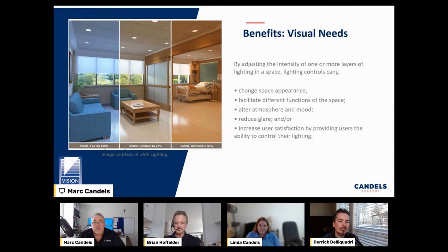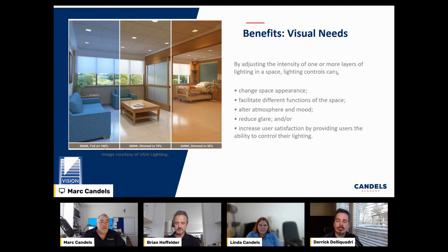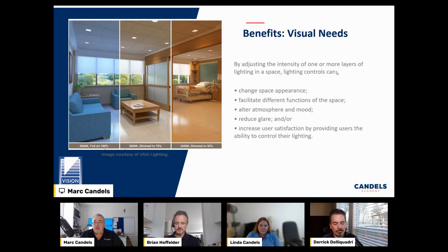Visual benefits of lighting control: you can go from cooler white on the left to medium to warmer tones on the right — for example in a hospital lobby where you want people to feel cooler. You can combine 5,500 Kelvin, then go to 3,800 Kelvin dimmed to 75%, then down to 50%, combining both color temperature and dimness. All done through lighting controls — great for changing space appearance and facilitating different functions in the same space.